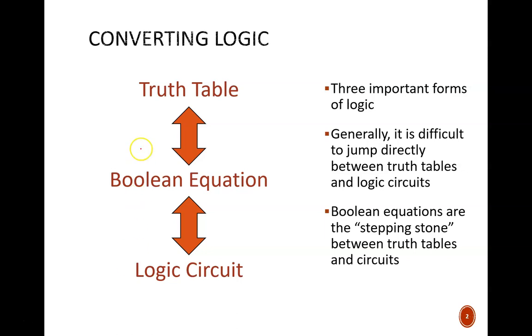For example, truth tables indicate all possible outcomes and are perhaps easiest to summarize verbal statements, while logic circuits allow for direct implementation in machines. Since all three forms are valuable, it is important to be able to convert between them. In most cases, it is difficult to jump directly from truth tables to logic circuits, or vice versa.